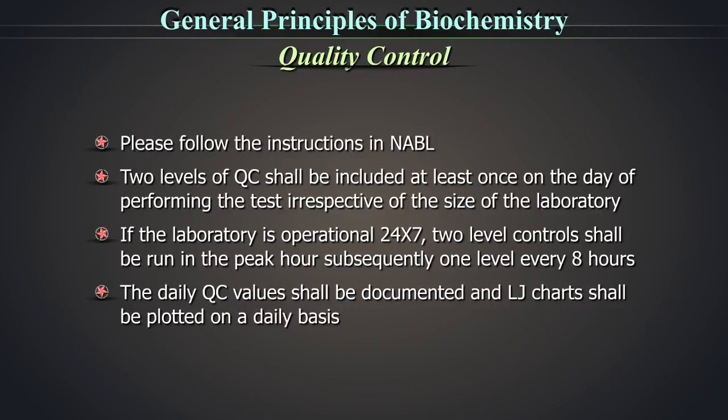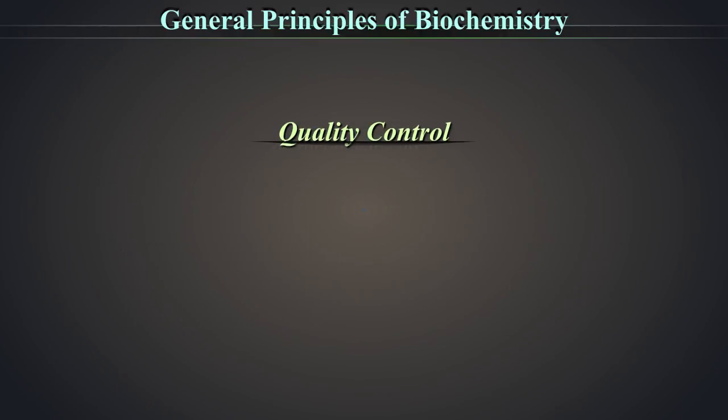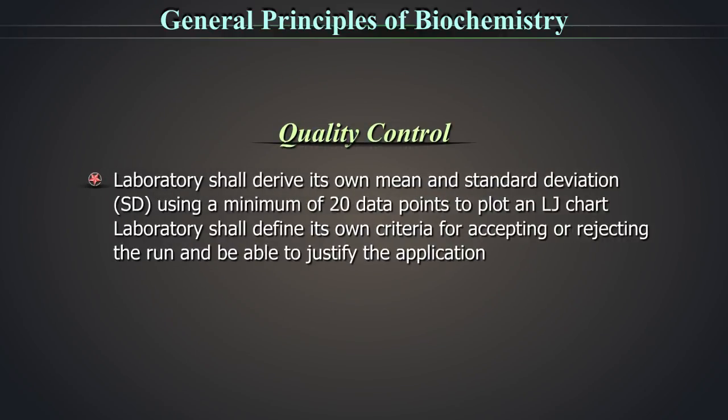The daily QC values shall be documented and LJ chart shall be plotted on a daily basis. The laboratory shall derive its own mean and standard deviation using a minimum of 20 data points to plot an LJ chart. The laboratory shall define its own criteria for accepting or rejecting the run and be able to justify the application.